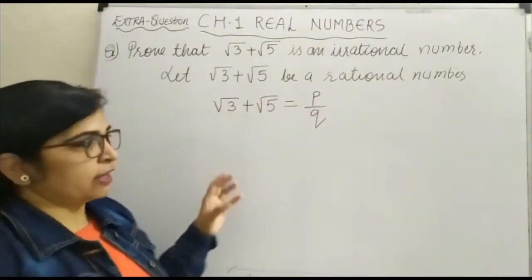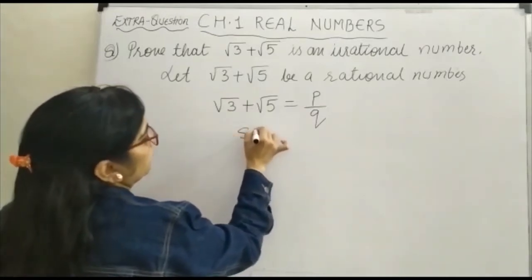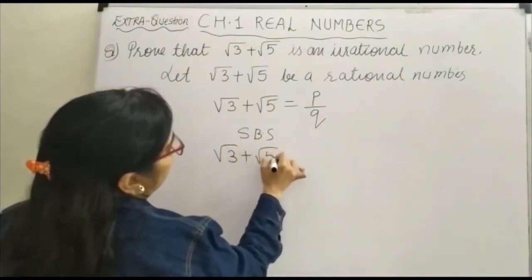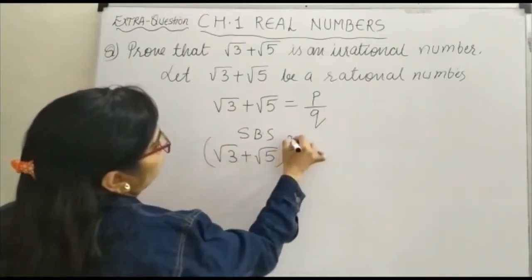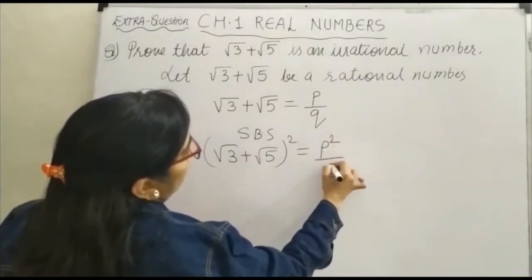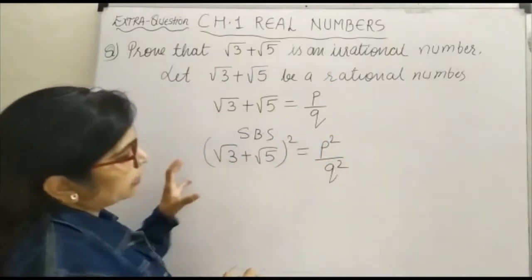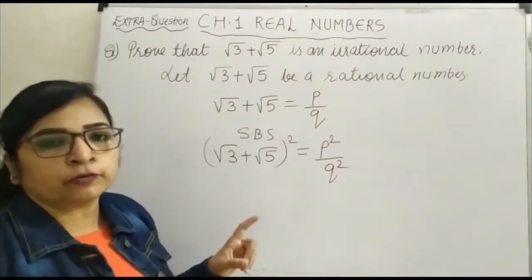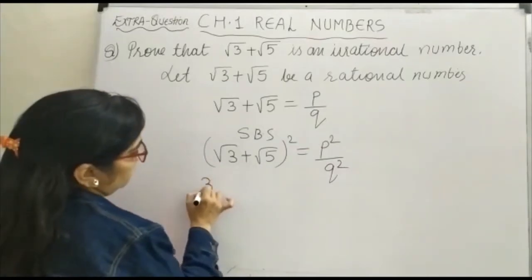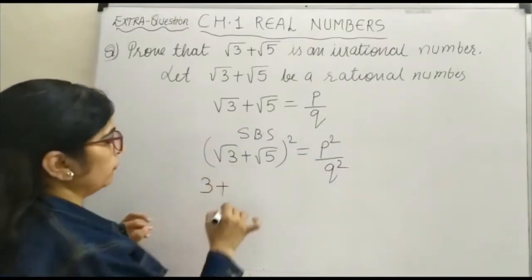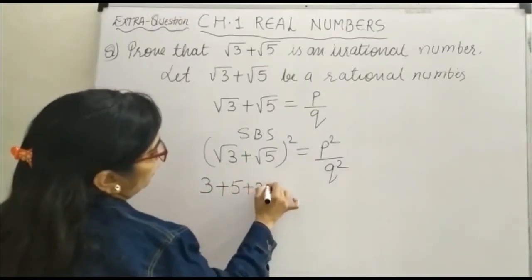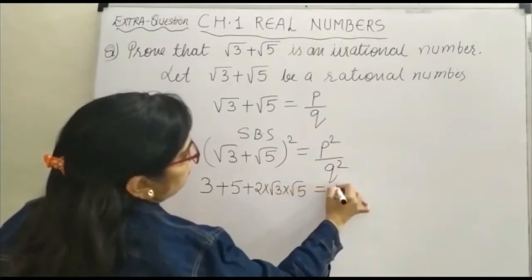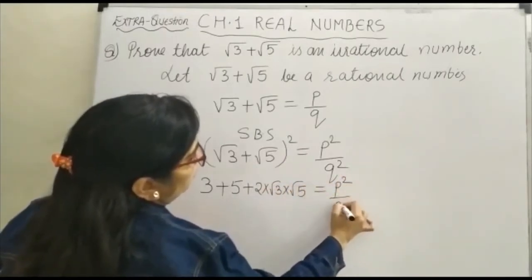On squaring both sides, we get (√3 + √5)² = P²/Q². When you expand this, the square of √3 is 3, and the square of √5 is 5. Then we are left with 3 + 5 + 2·√3·√5 = P²/Q².